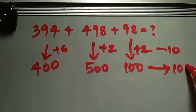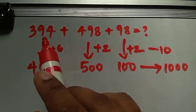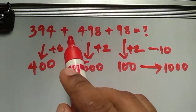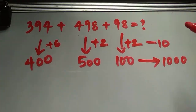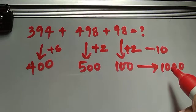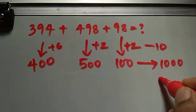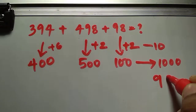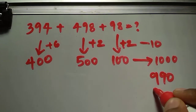So to get the original answer for 394 plus 498 plus 98, we subtract 10 from 1000 and we get the answer as 990.